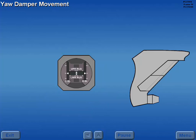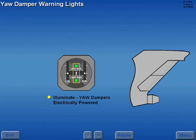Yaw damper movements are visible on the rudder position indicators but do not move the rudder pedals. Some aircraft are equipped with yaw damper lights which illuminate when the yaw dampers are electrically powered.